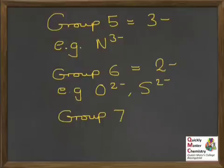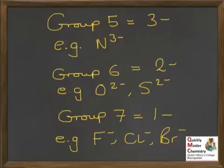And then group 7, only 1 electron to gain now to get up to the stable 8, so 1- ions, things like the fluoride ion F-, chloride Cl-, bromide Br-. Note the way that the metals just keep their name unchanged when they make an ion, but the non-metals get this 'ide' ending if it's just the single non-metal atom on its own.